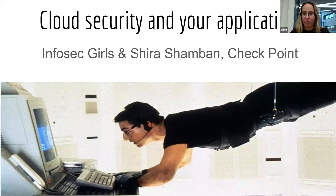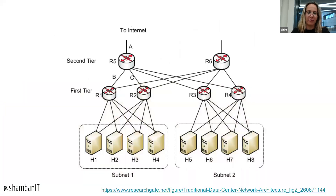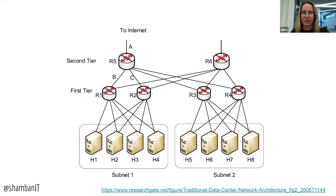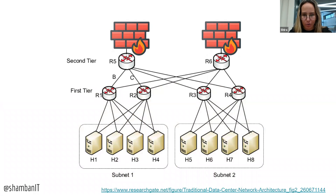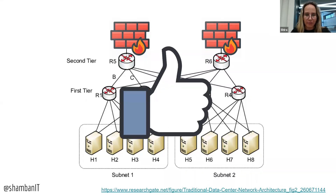So without further ado, let's get started. If you guys remember, this is a general graph of old on-prem infrastructure. Back in the days when on-prem was all we had, doing security was fairly easy — all you had to do was put a firewall in your exit nodes. That way you could control and filter everything going in and out of your environment. It was really easy, and you felt really safe and happy about it.